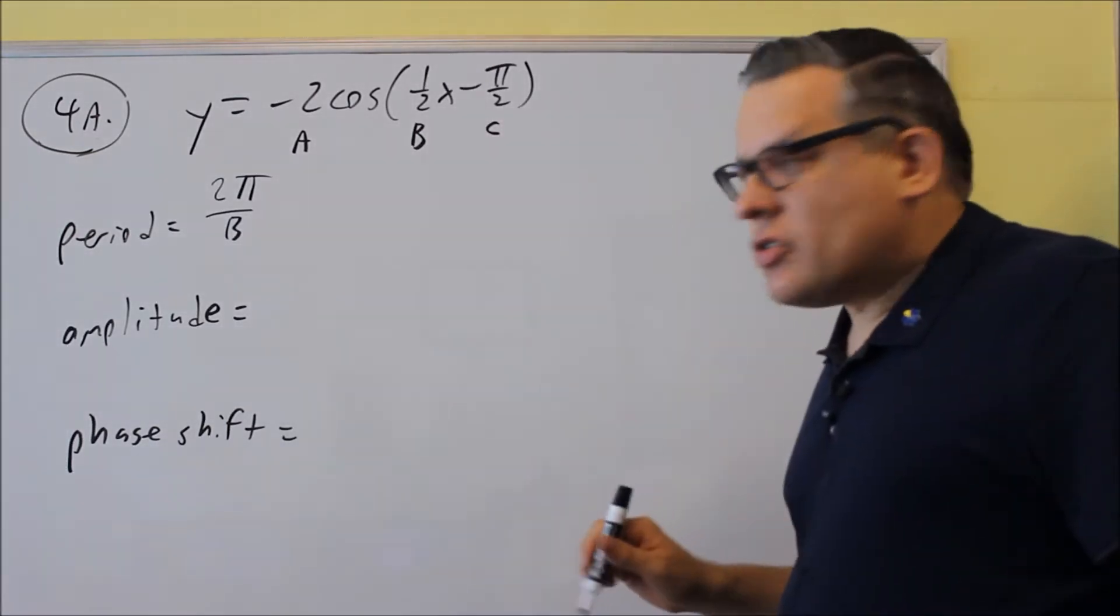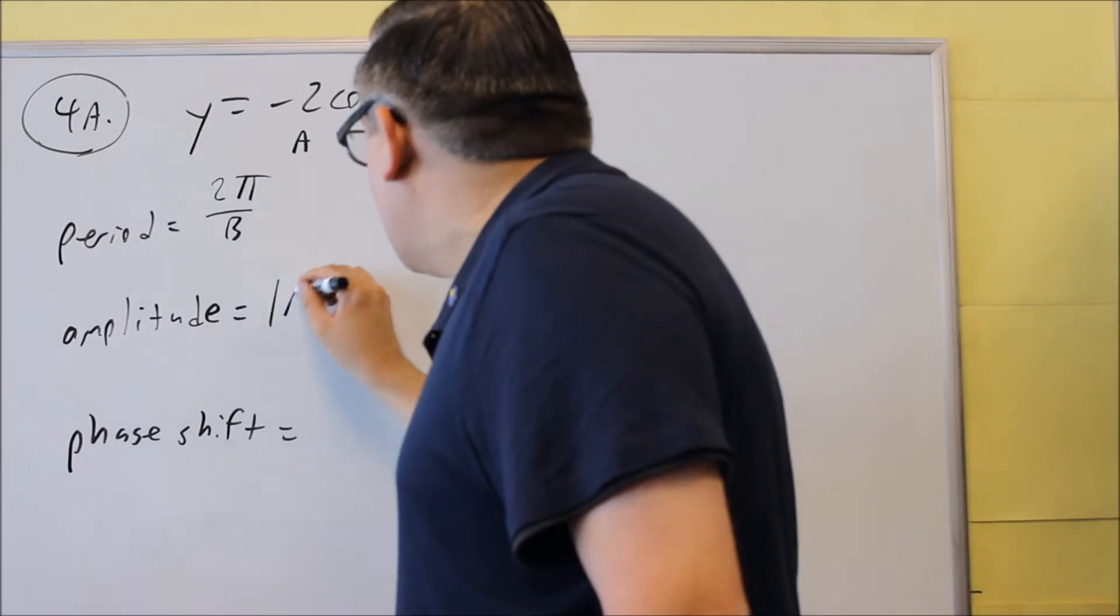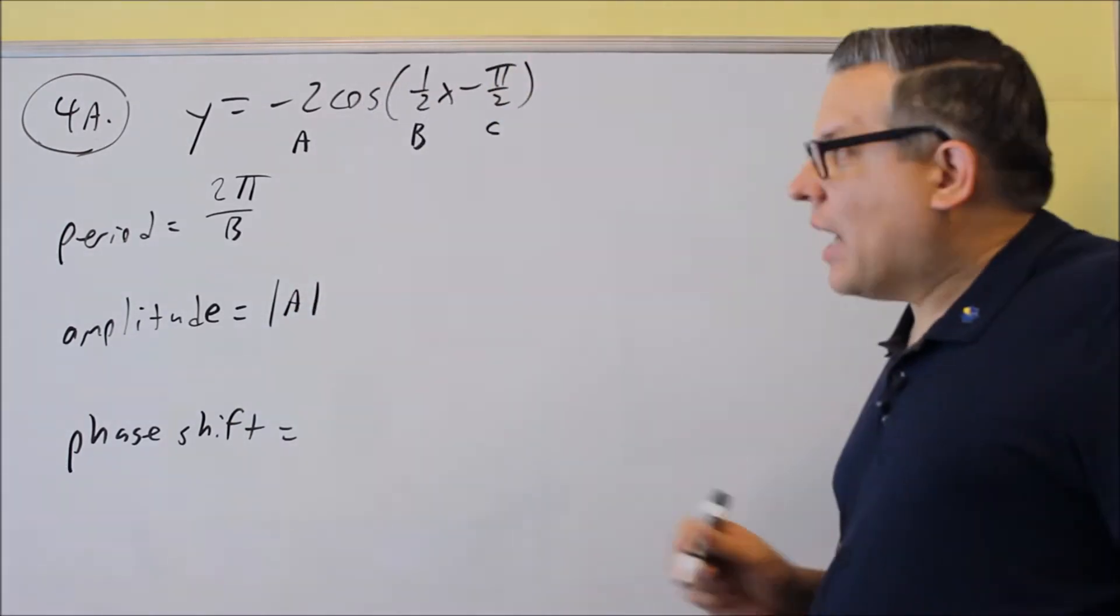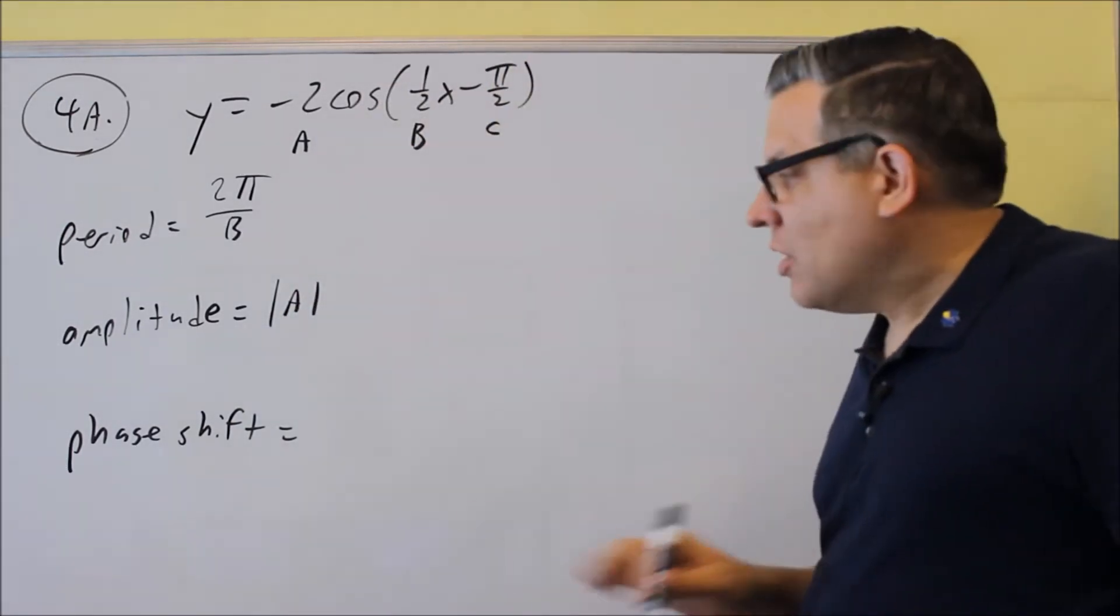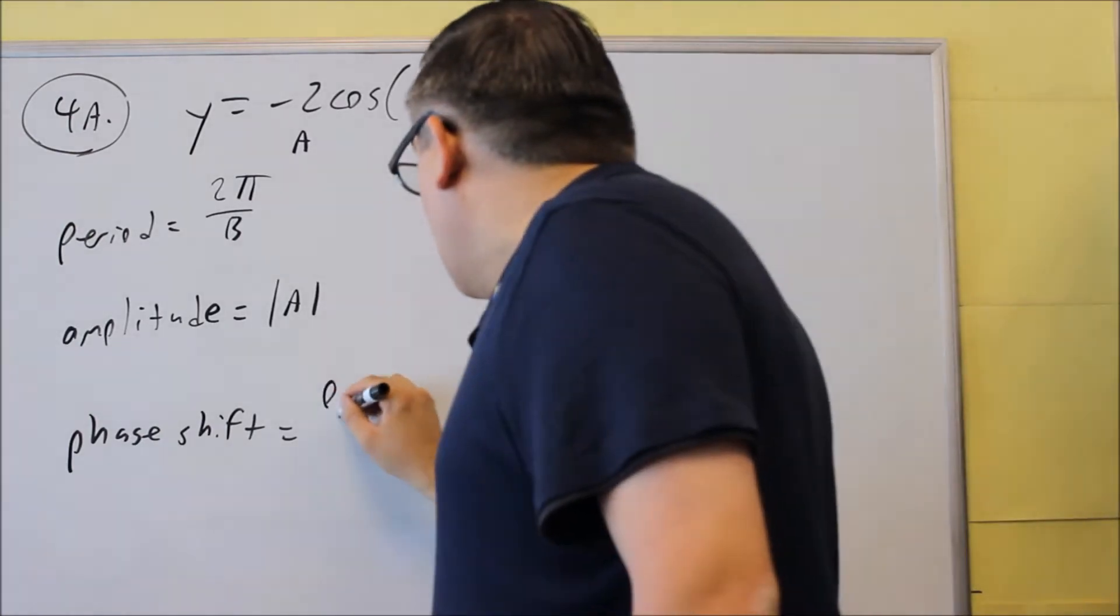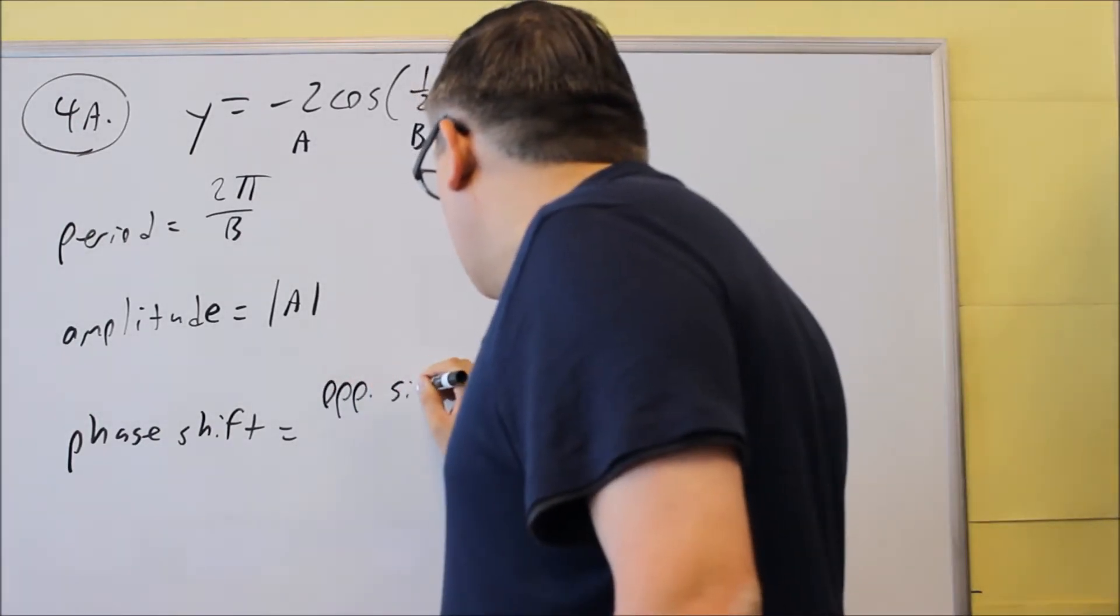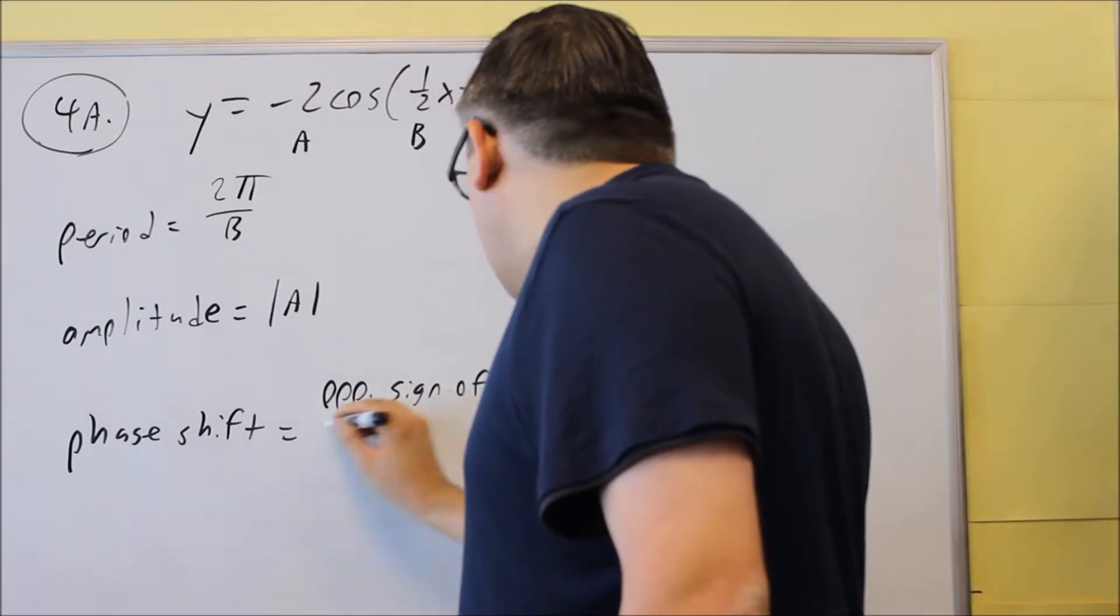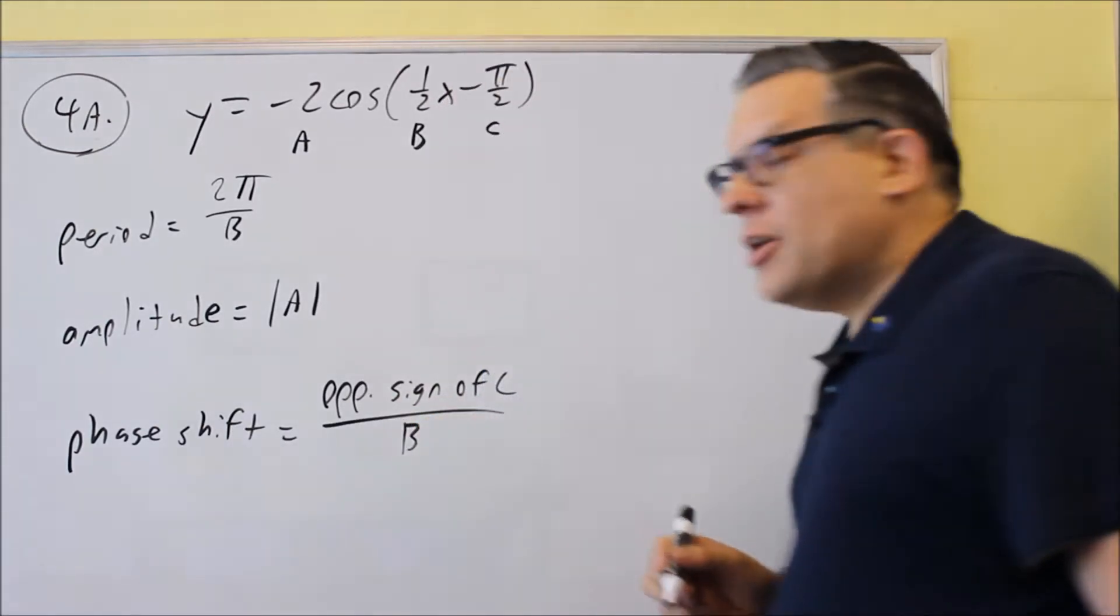Your amplitude is the absolute value of a, so that's the formula we're going to use, absolute value of this number in front of the trig function. Your phase shift is the opposite sign of c over b.